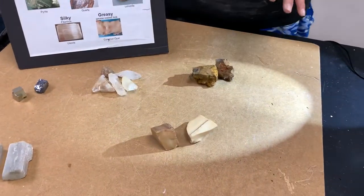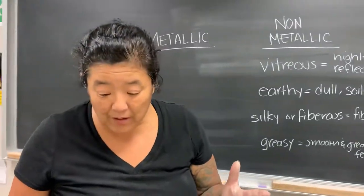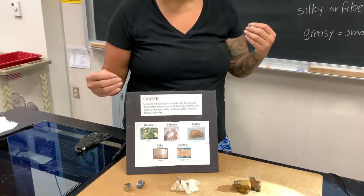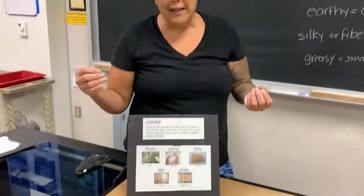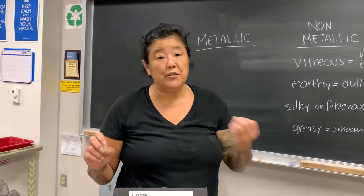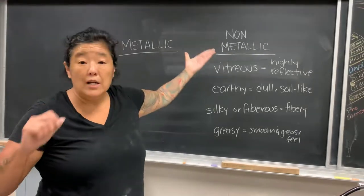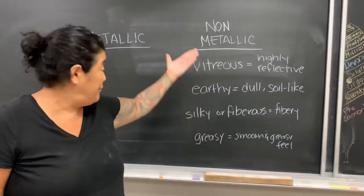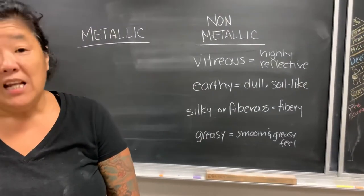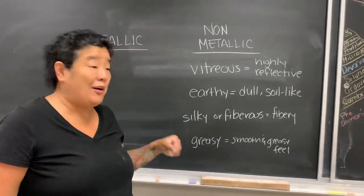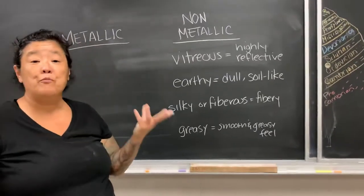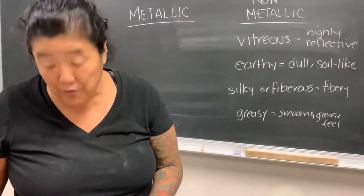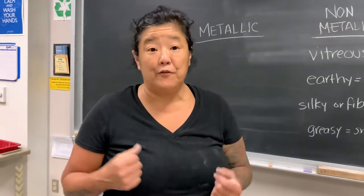These are the most common lusters you'll find. How I want you to break this down is: first tell me, is it metallic or non-metallic? If it's metallic, you're done. But if it's non-metallic, then take that next step and define which category it falls under. There are quite a few more categories I didn't cover — I just brought the most common ones. If it's in your book, go ahead and use it, and if it's not listed, you can use your own words to describe what you think the luster is. You'll be given a few mineral samples to go ahead and try to identify the luster on.